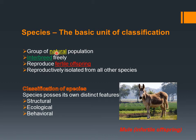A species should be a natural population — it should not be synthetic or cloned. Interbreed means the process of mating to produce offspring. Fertile offspring means their babies should have the fertility to produce their own babies, which is essential for the continuation of generations.